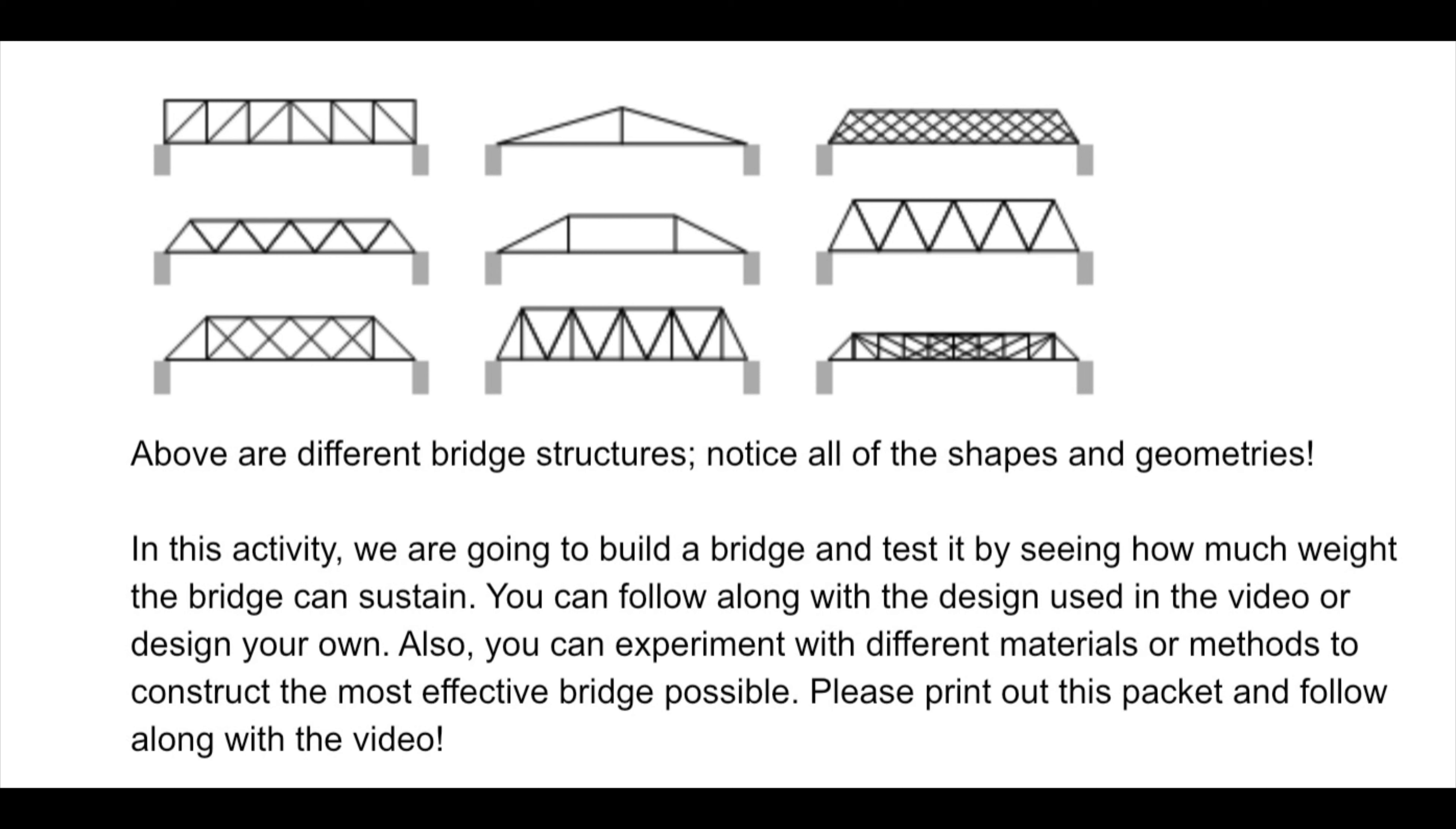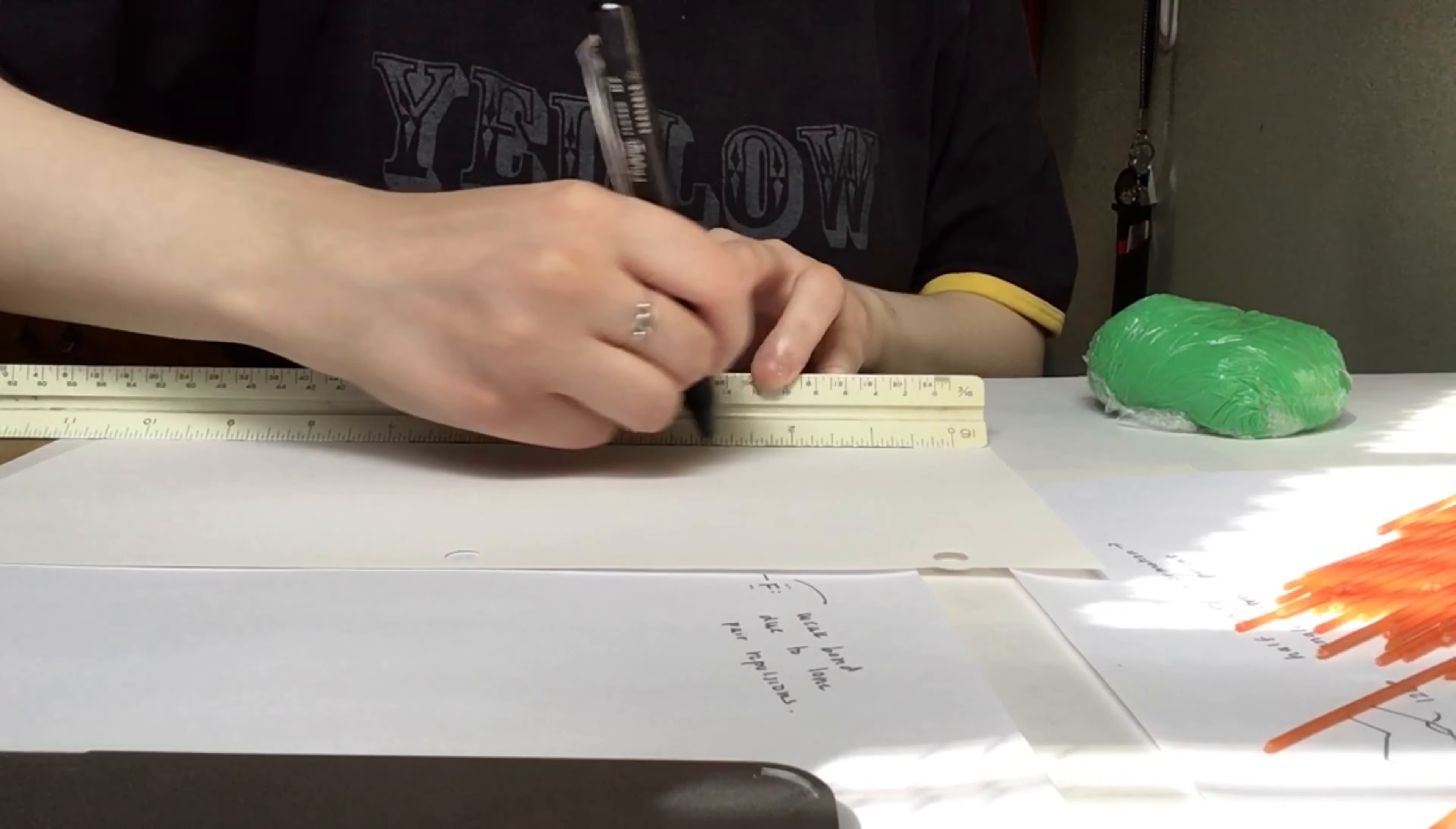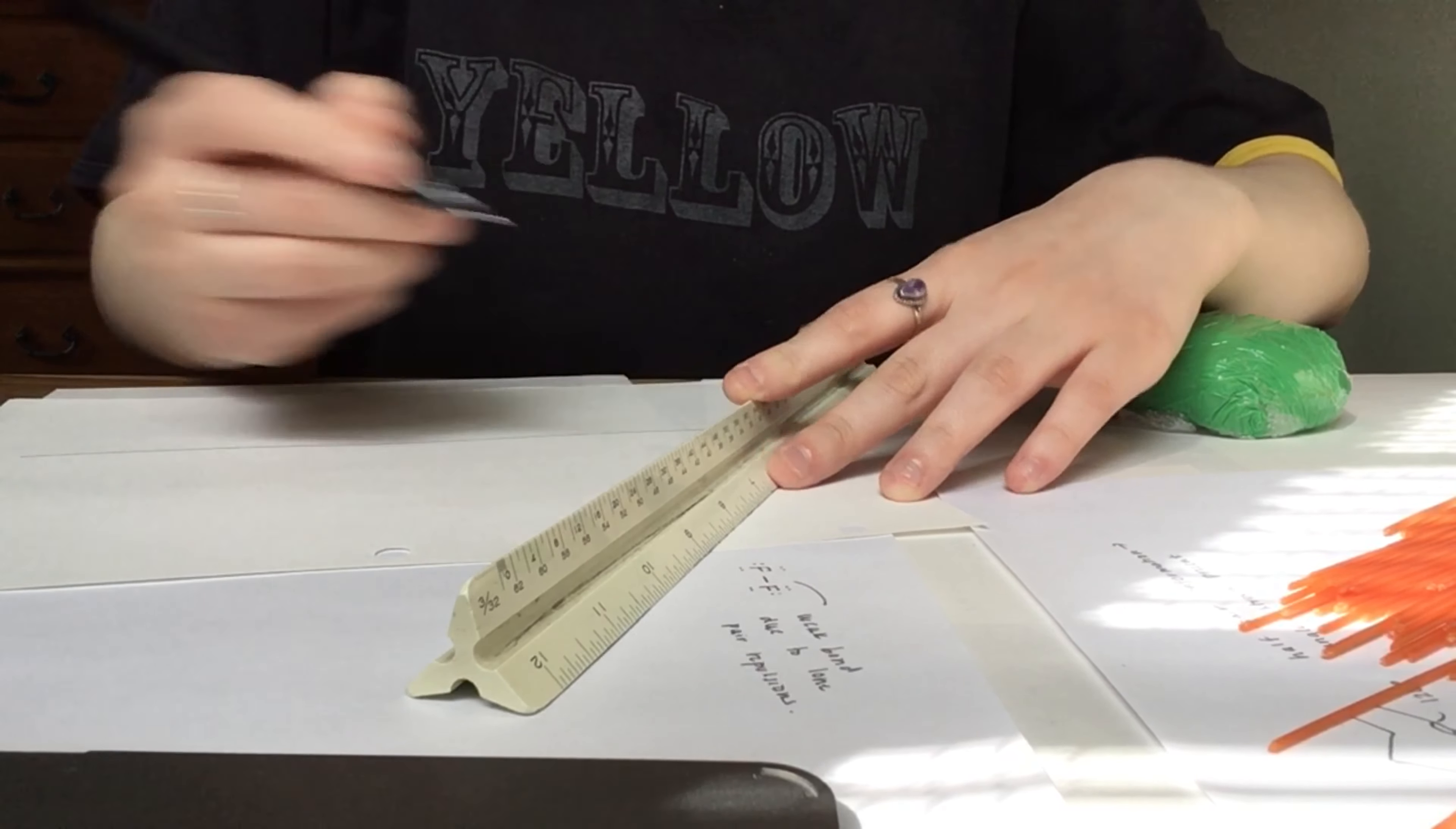You can follow along with the design used in this video or design your own. Also, you can experiment with different materials or methods to construct the most effective bridge possible. I would highly suggest that you print out this packet and follow along with the video. All you need for this project are long pasta noodles and play-doh. If you don't have play-doh laying around at home, that's totally okay. I have a recipe attached in the packet that you can use.